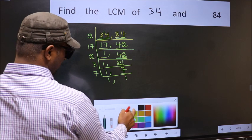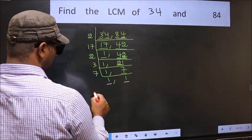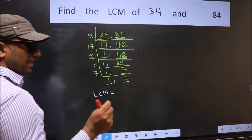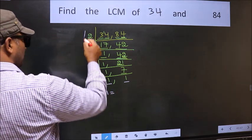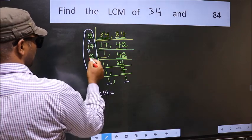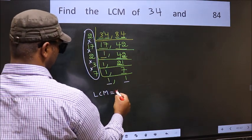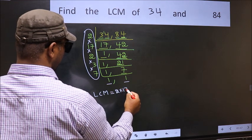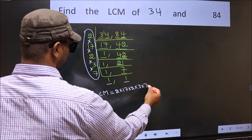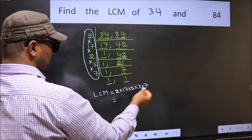So we got 1 in both the places. So our LCM is the product of these numbers. That is 2×17×2×3×7. When we multiply these numbers, we get 1428 as our LCM.